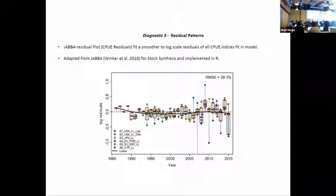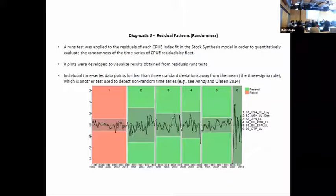Felipe has also developed some plots that we've been using to look at the same data in a different way. These are the residuals to the fit for each CPUE series in the model, series one through six. What we're doing here is using a runs test from R to determine if the series are random or not. If the color code is red that means there's a non-random pattern. In addition there's another test which is this three sigma rule - if any of your points are outside of three standard deviations, that's what these gray bars are, that is another indication that they may be non-random.